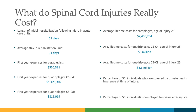You can imagine, just because of the equipment needs and amount of care that higher quads may need, some of those costs are going to be quite a bit higher. Percentage of SCI individuals covered by private health insurance at the time of injury: close to 50%. Percentage of SCI individuals unemployed ten years after injury: 77%. This is a really hot topic within the spinal cord injury world — how do we get people back into meaningful, purposeful work? How do they contribute to society again? There are ways to do that, but there are a lot of barriers.